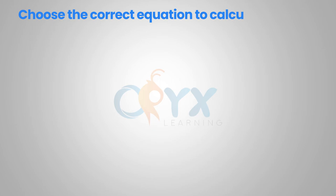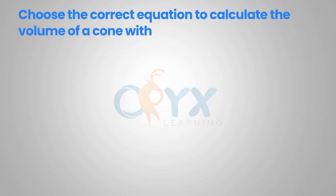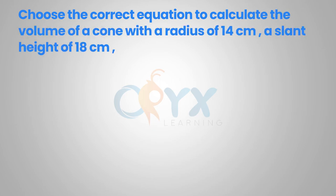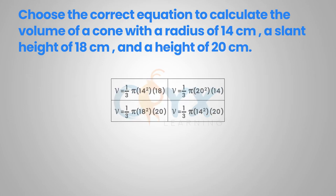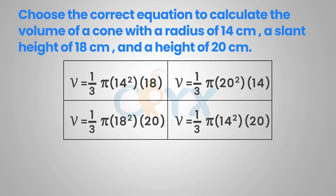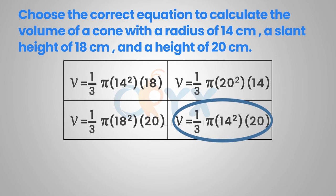Choose the correct equation to calculate the volume of a cone with a radius of 14 cm, a slant height of 18 cm, and a height of 20 cm. Using our volume of a cone formula, V equals one-third pi R squared H, we can substitute in the values: R equals 14 and H equals 20, giving us V equals one-third pi times 14 squared times 20. Remember to use the actual height and not the slant height. Therefore, the answer matches up with the fourth answer choice.